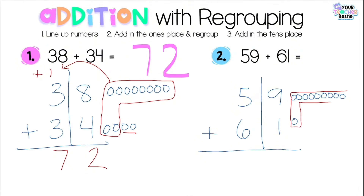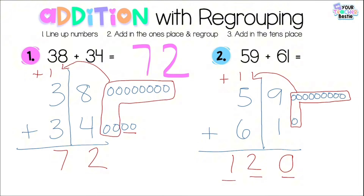Do I have any ones left over? No, so I write a zero in the ones place. The ten I created goes up to the tens place — plus one ten. 1 ten plus 5 tens is 6 tens, and 6 tens plus 6 tens is 12 tens. Now I have a three-digit number in the ones, tens, and hundreds place, giving me a total of 120.